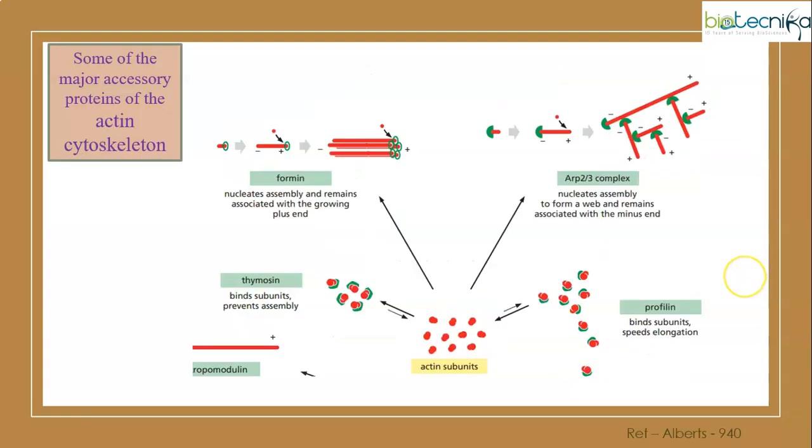Next, the major accessory proteins related to actin cytoskeleton. Formin will bind towards the plus or growing end of the microfilament, helping in nucleation, that is assembly. ARP2/3 attach to the minus end, also helping in nucleation, but they form branches like this.